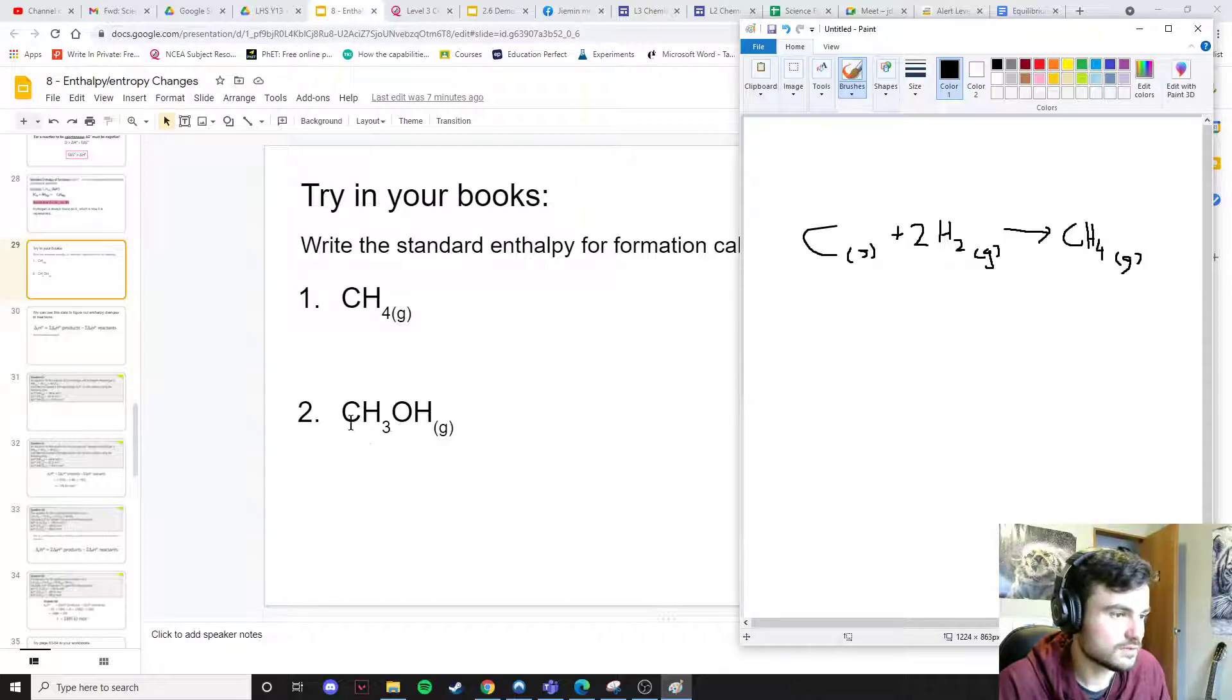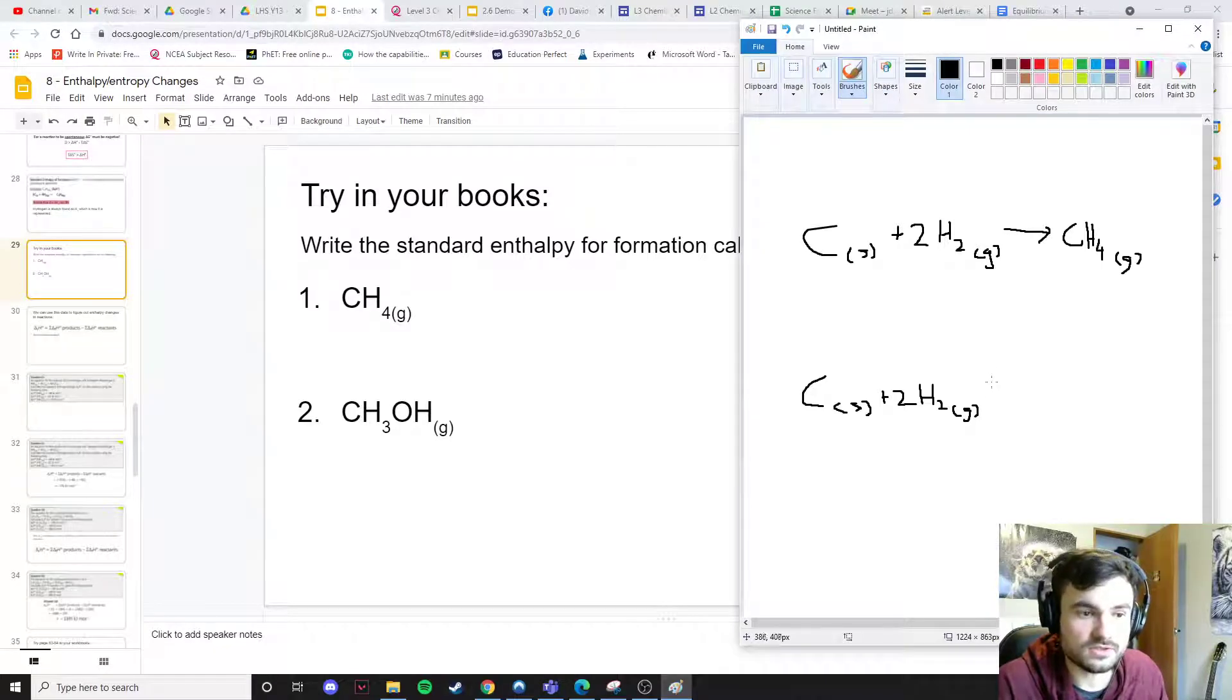The next one is an alcohol, methanol. Again we have one carbon so just carbon solid. We have four hydrogens so 2 H2 and then we have one oxygen. How is oxygen found in nature? Oxygen is not found by itself; it's found in oxygen gas O2. We need one oxygen here though, so we're going to write half of O2. This is perfectly okay.